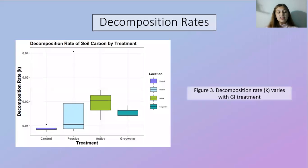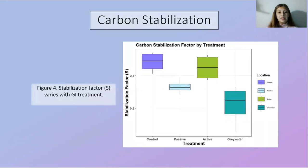Here we can see that each of our treatments have a higher decomposition rate than the control. We see the opposite for carbon stabilization — each treatment has a lower carbon stabilization factor than the control.